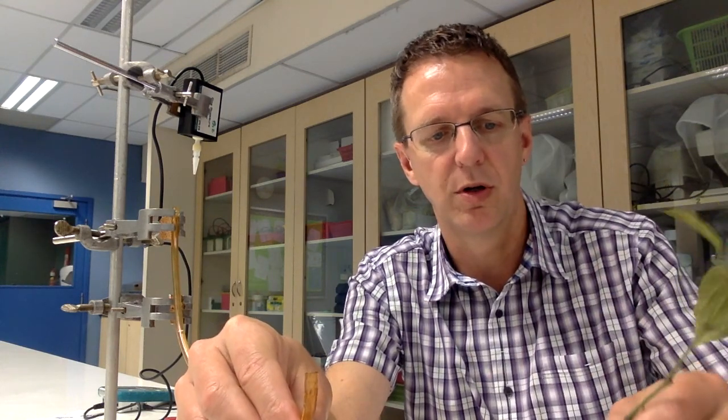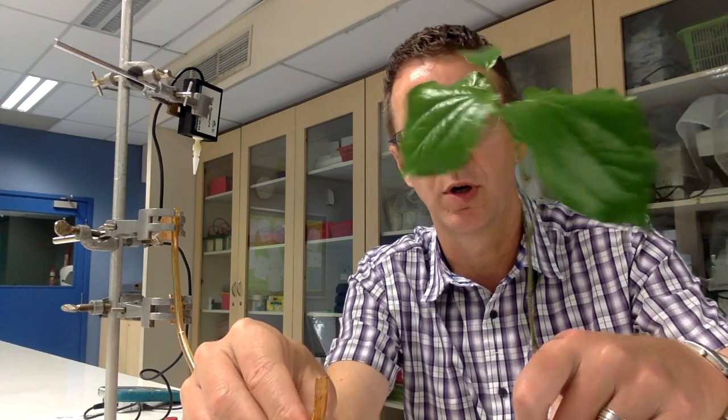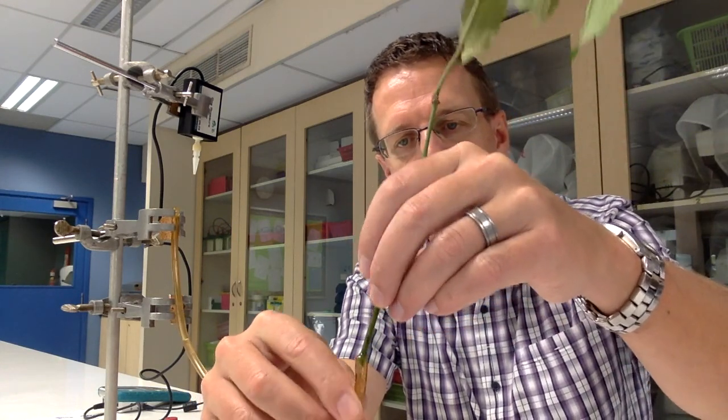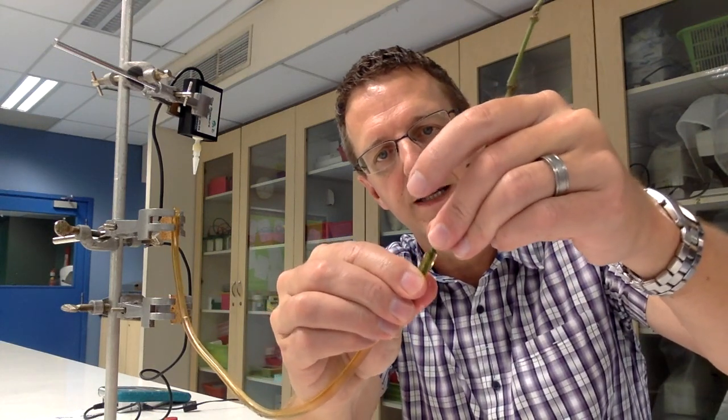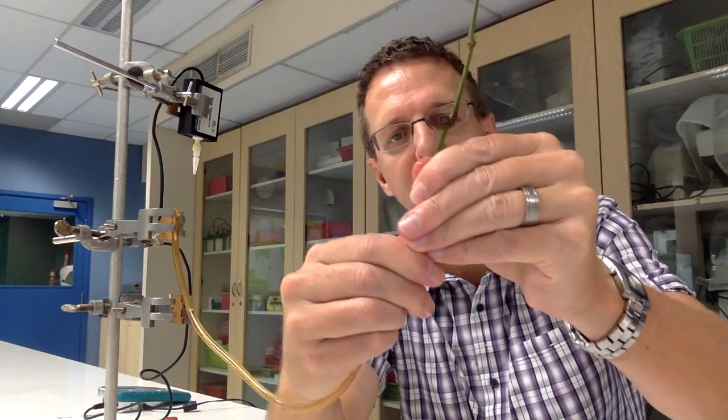Cut a new 45 degree angle on your stem of your plant. I've already done that. But you want to do it under water because you want no air to come into the stem, otherwise it's not going to work. So you cut it under water and then as quick as you can, you want to move the plant over to the tube. And you want to just insert it as far as it goes without breaking the stem.